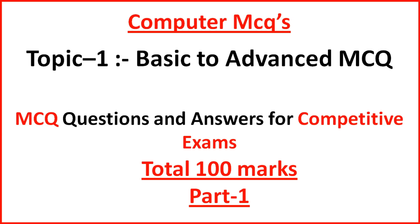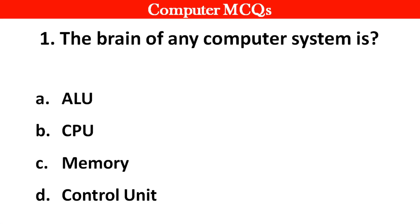Question no. 1. The brain of any computer system is — Options A: ALU, B: CPU, C: Memory, D: Control Unit. Right answer is option B: CPU.